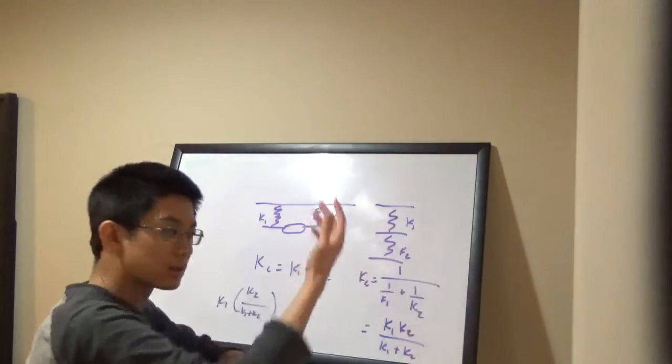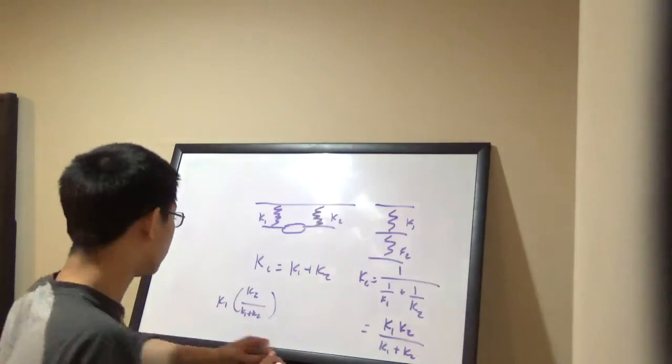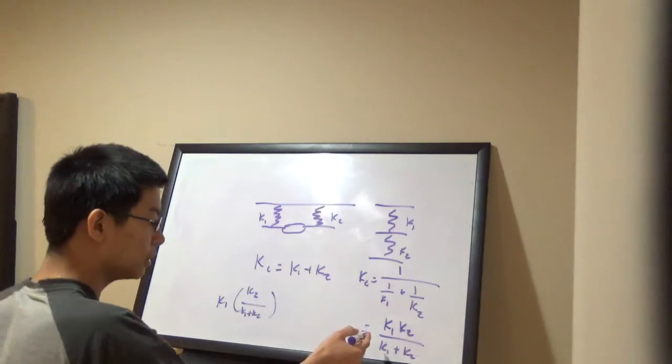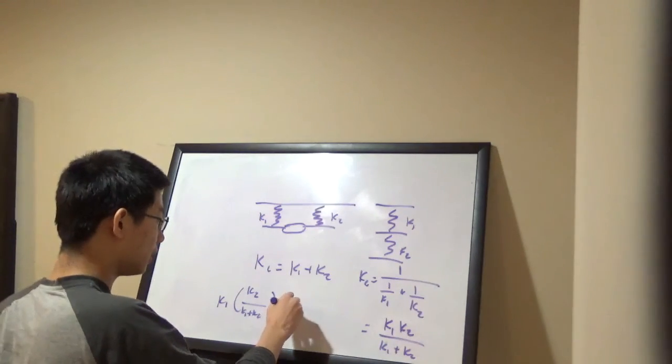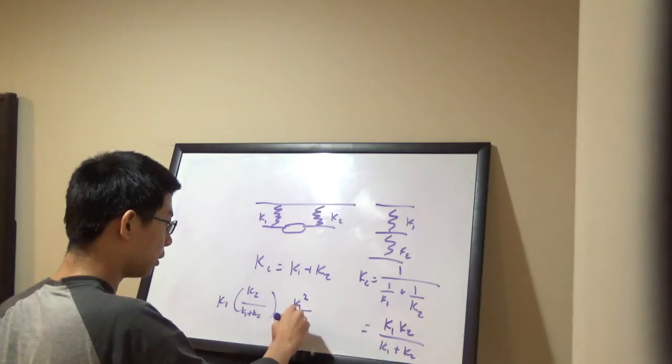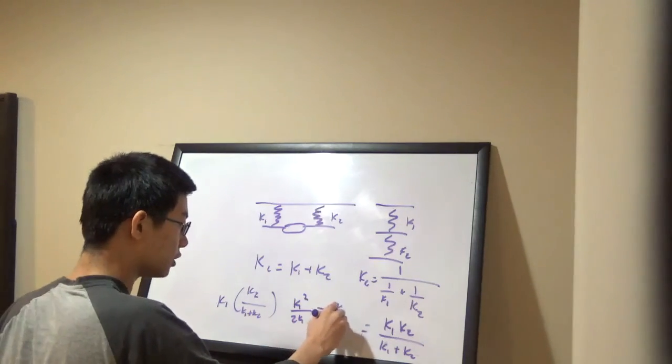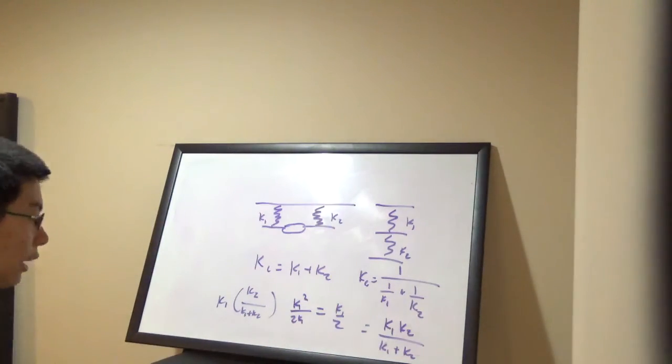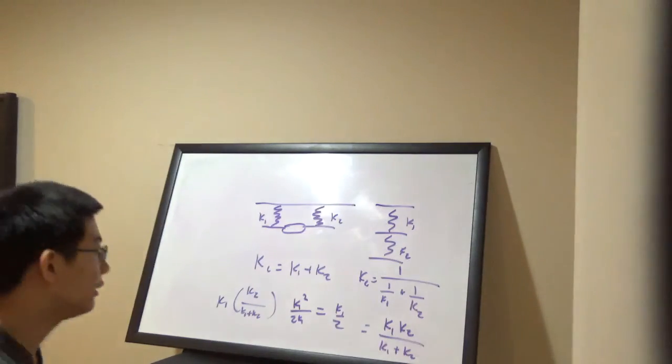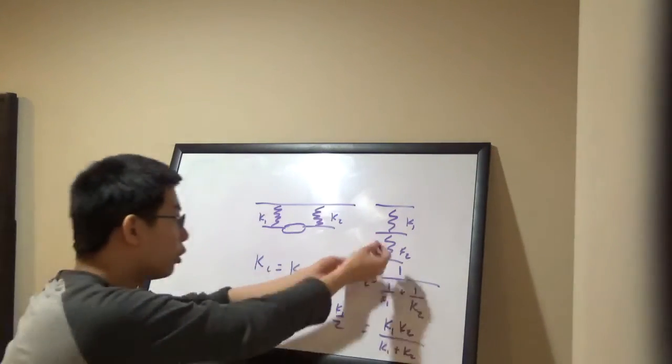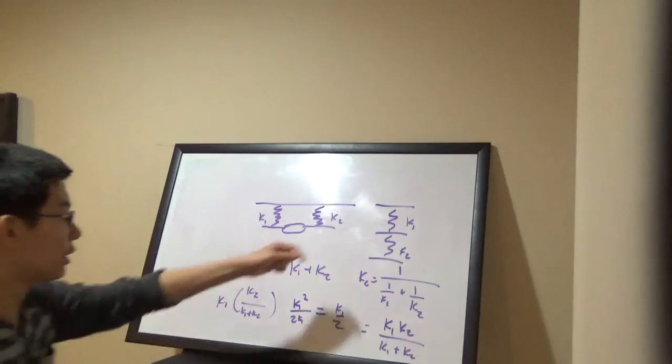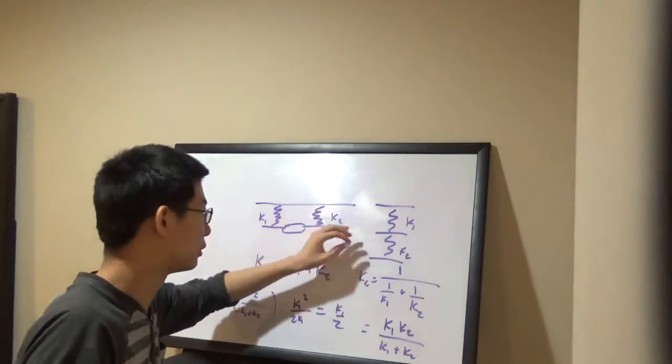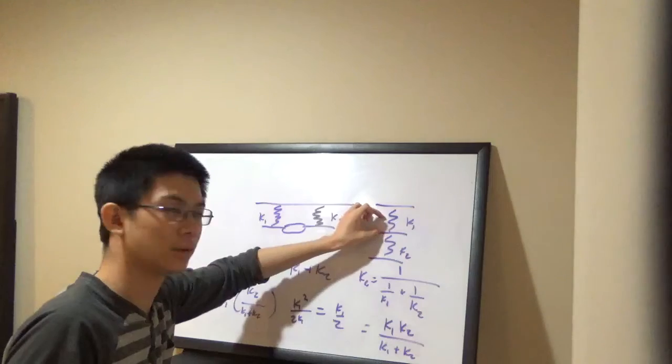Because maybe these two springs are equal. If they're equal, if k1 is equal to k2, this is k1 times k2 over 2k1, so this is k1 squared over 2k1, which is equal to k1 over 2. Then it would be only half, half of the original spring force. If these were the same spring and I pulled on this combined sequence, half of my pull is going to go into this spring and half of it's going to go into here.